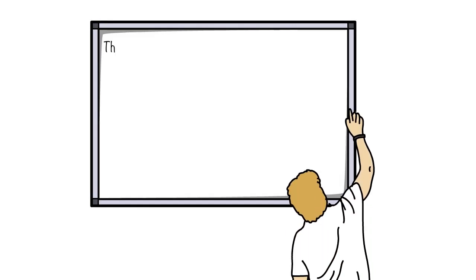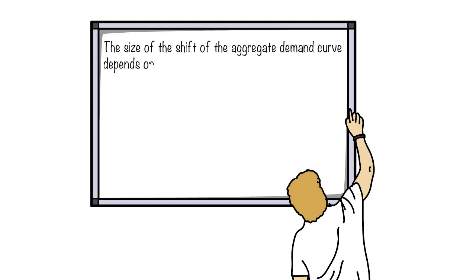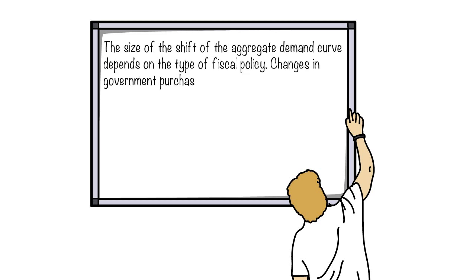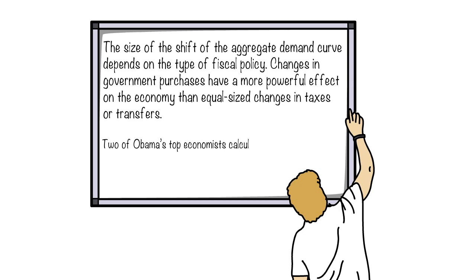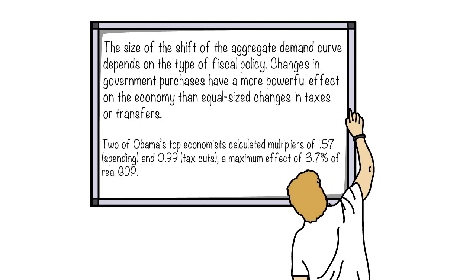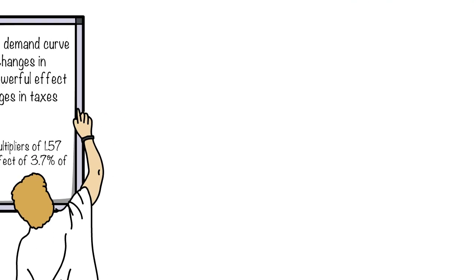The difference between spending and tax on the economy is also important. Changes in government purchases have a more powerful effect than equal-size changes in taxes or transfers. For example, in Obama's administration back in 2008, a fiscal expansion was undertaken in the US — the multiplier for spending was 1.57, but it was estimated at only 0.99 for taxation. This shows the difference between government spending and taxation multipliers.